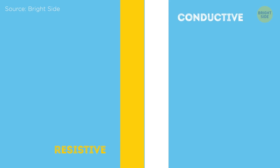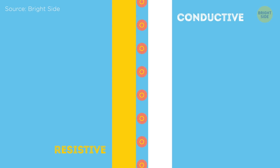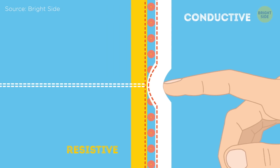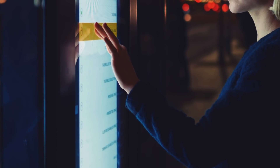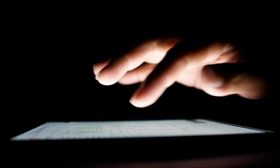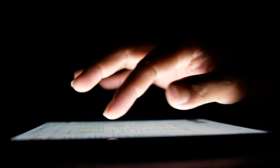Resistive touchscreens operate by sensing direct pressure applied by the user. They consist of two layers — positive and negative — separated by a gap in the middle. When an object such as a fingertip or stylus presses down on the outer surface, the positive and negative touch, completing a circuit. Although it has disadvantages such as low touch sensitivity and inability to recognize multi-touch, resistive touchscreens are still praised for their handwriting recognition, which is why they're still used today for digital signatures and drawing tablets.